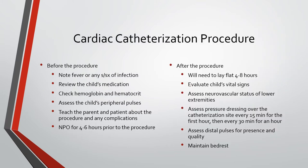For the cardiac catheter procedure beforehand, we want to note any fever or signs and symptoms of infection, as any infection would necessitate rescheduling the procedure. We want to review the child's medications — if the child is on anticoagulants, we may need to hold that medication for several days prior to reduce bleeding risk. We want to check hemoglobin and hematocrit, assess the child's peripheral pulses, and mark the location of those pedal pulses so they're easily assessed after the procedure. Teach the parent and patient about the procedure and any complications, and the child must be NPO for four to six hours prior.